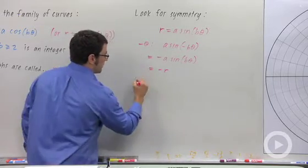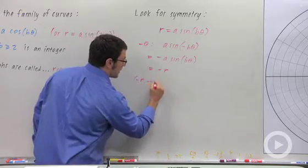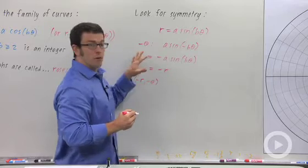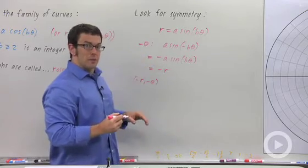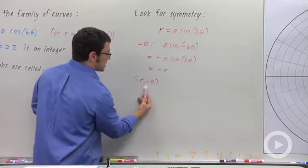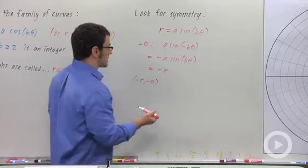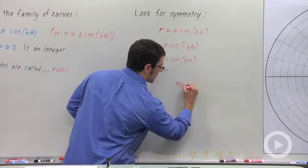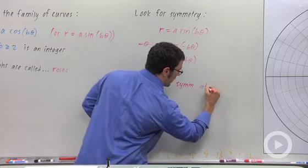And recall that if negative r and negative theta is in the graph of my curve, then this graph is going to be symmetric about the y-axis because this is a reflection of the point r theta about the y-axis. So we get symmetry about the y-axis.